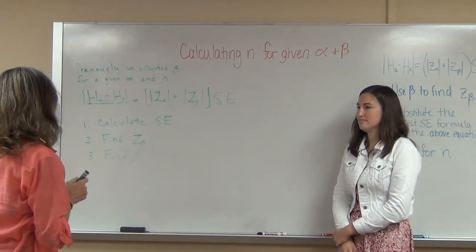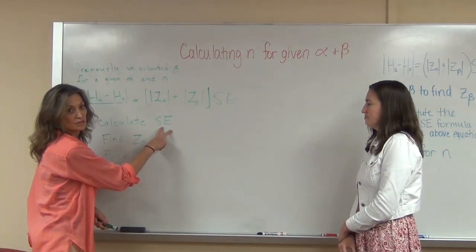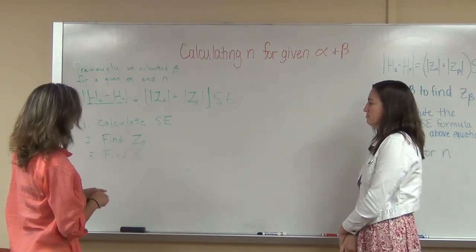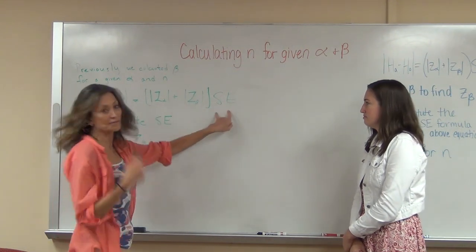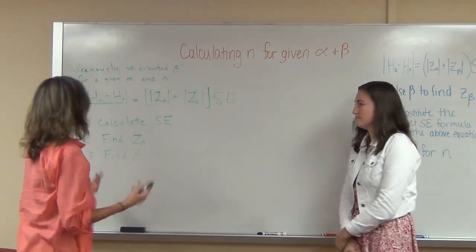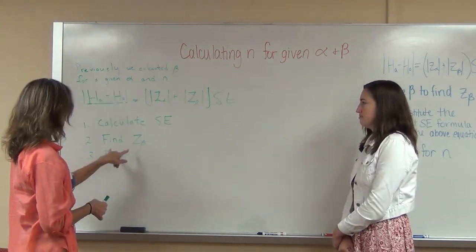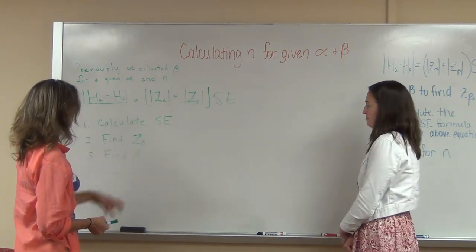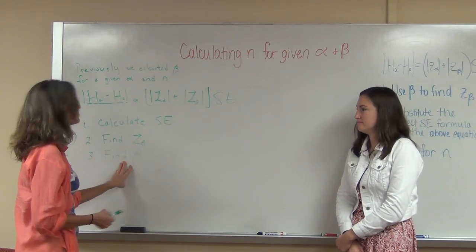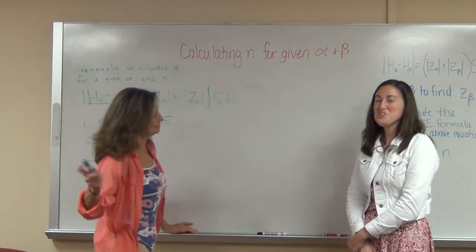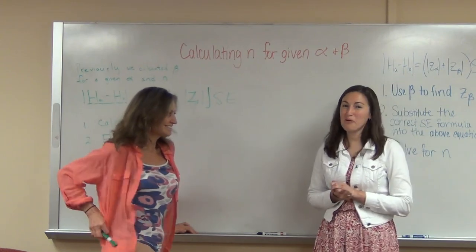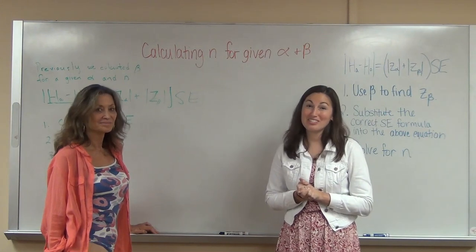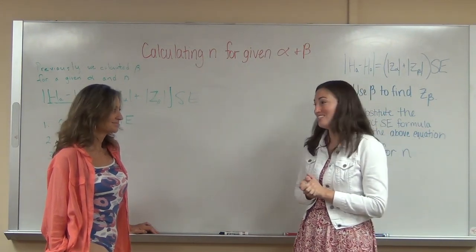So what do we know? We can calculate the standard error—that's just SD over root N—and we know N. Sometimes you might have to calculate two standard errors. Then once we've got that, we know everything, so we can solve for z-beta. And once we solve for z-beta, we can get beta. And we weren't that happy with the beta, were we? It was 36.5%, so the power was 63.5%, which isn't that good.